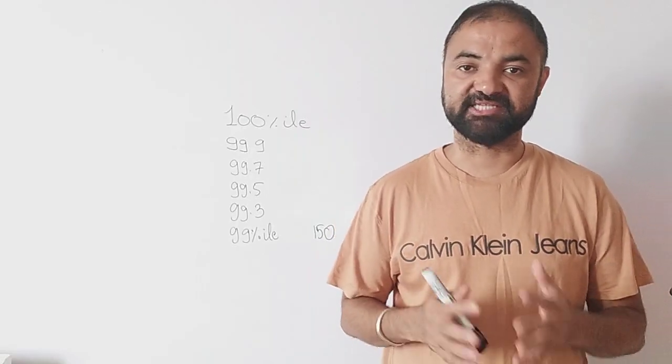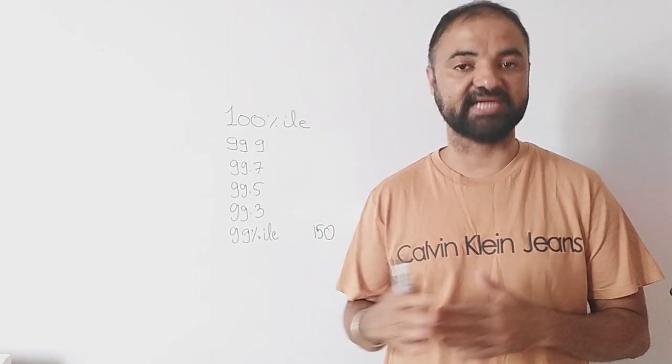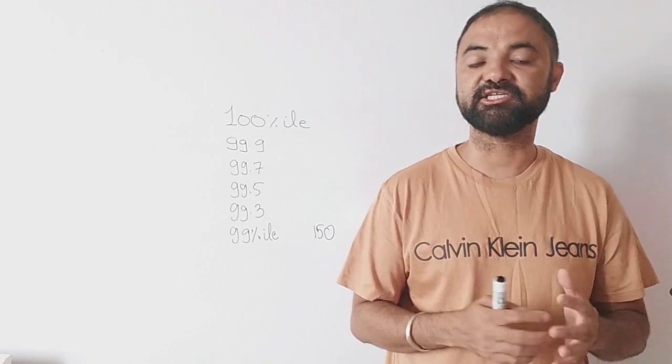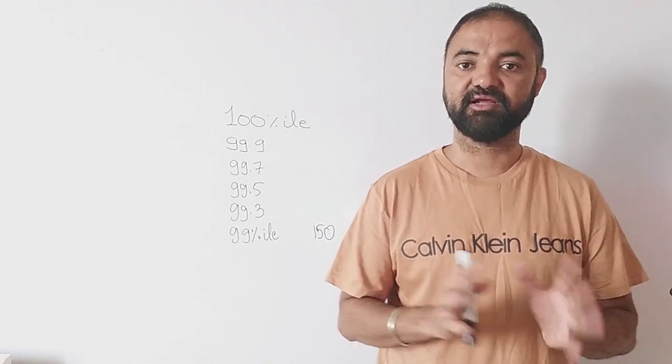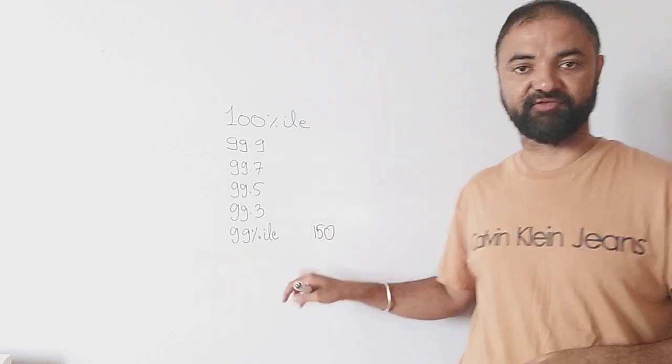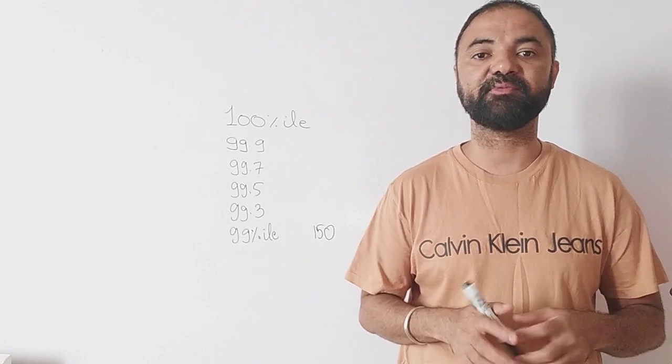Hi guys, the magic happens in the CAT paper at 99 percentile plus, so 99 to 100 percentile. How much you need to score in the CAT paper we'll talk about in this video. 99 percentile is around 150 marks, so you don't need to be a topper, you don't need to be rank 1.